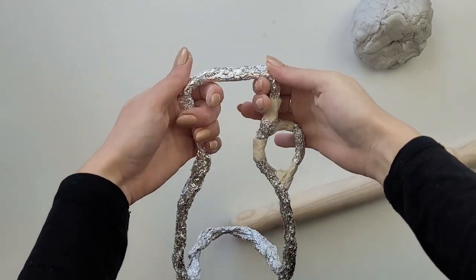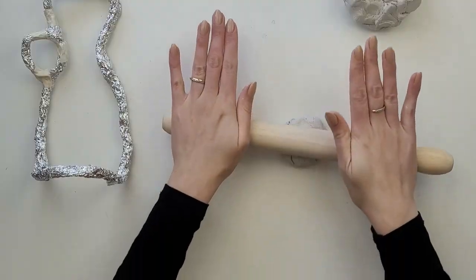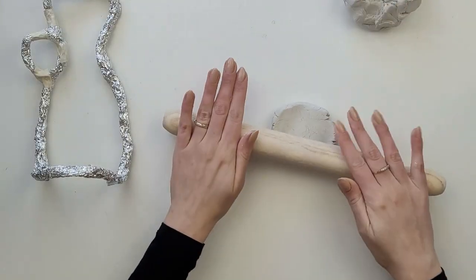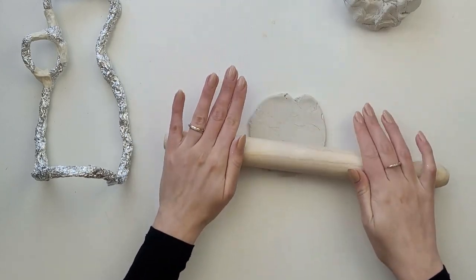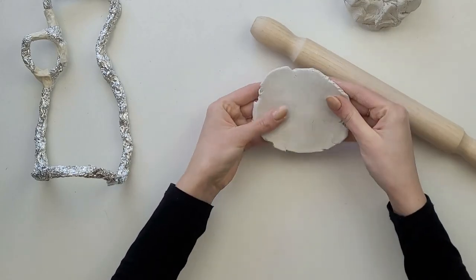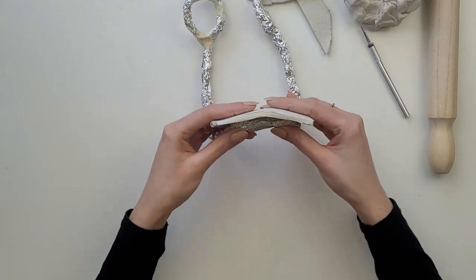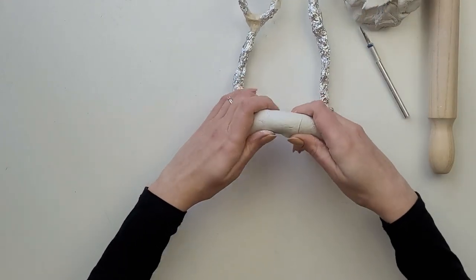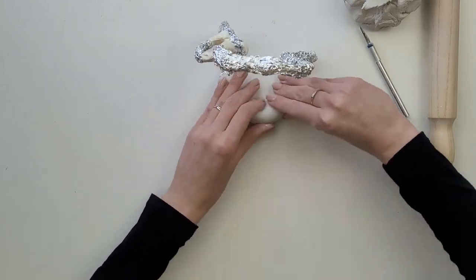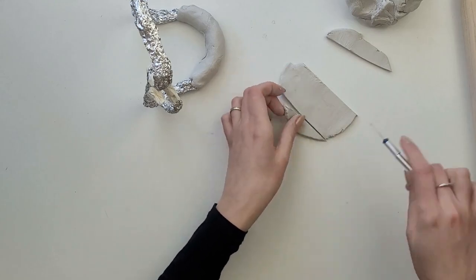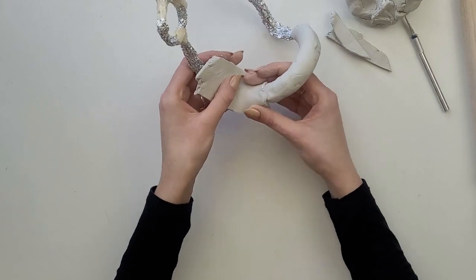Places where the foil didn't want to stick very well I taped it with paper masking tape. I take a small piece of air dry clay, roll it flat and then wrap it around the construction. And just part by part I cover it all with the same thickness of air dry clay.